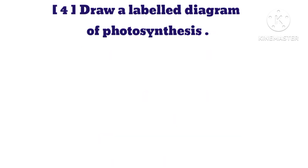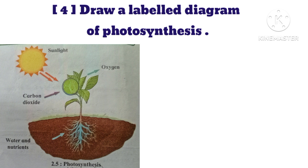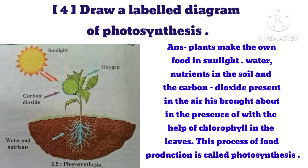Question 4: Draw a labelled diagram of photosynthesis. Question 5: Plants make their own food in sunlight. Water, nutrients in the soil, and carbon dioxide present in the air are used with the help of chlorophyll in the leaves. This process of food production is called photosynthesis.